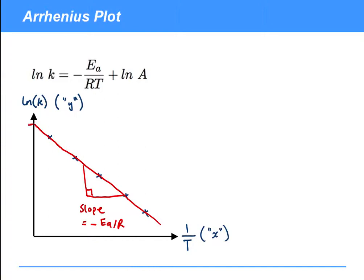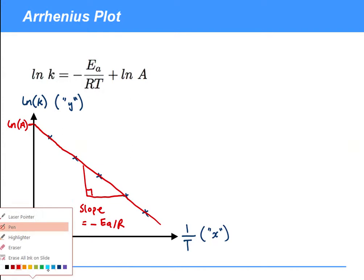Now this intercept here, this Y intercept is going to be ln A. Now that's not going to be determinable anywhere near as accurately because we're extrapolating to find it. And to actually find A, we're going to need to exponentiate which will introduce additional large errors. But in principle, it's possible.